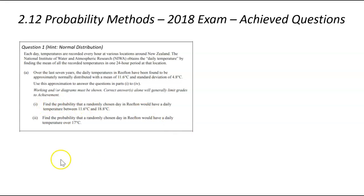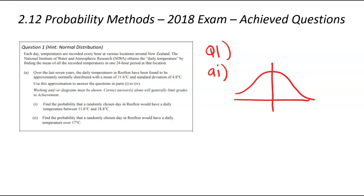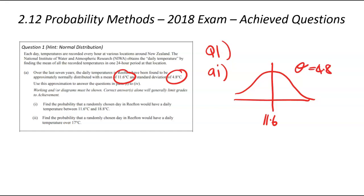Question number one: find the probability that a randomly chosen day in Reefden would have a daily temperature between 11.6 degrees and 18.8 degrees. When you're finding a probability, I'd always start by drawing a generic normal distribution curve, put in the mean in the middle, and the standard deviation on the top right. The mean for this question is 11.6 degrees and standard deviation is 4.8. We shade in the portion of the graph between 11.6 and 18.8, and we're looking to find the area or proportion that relates to that shaded part.